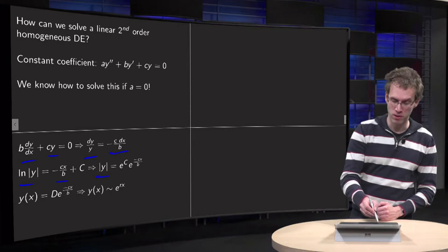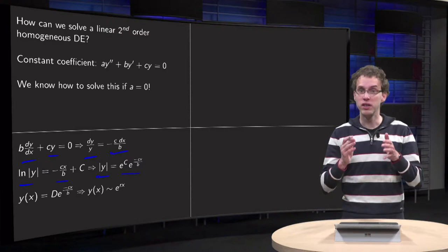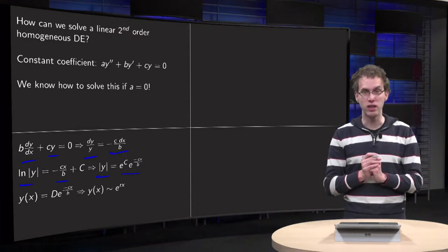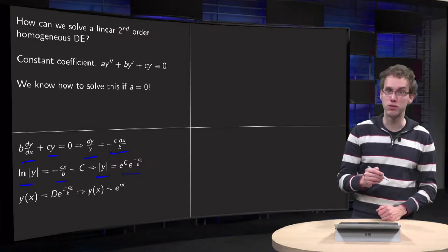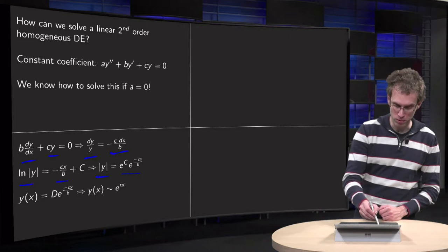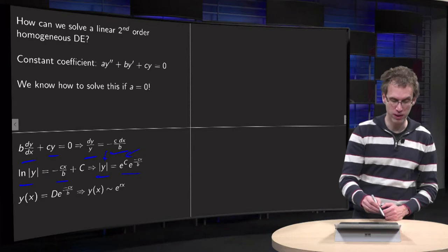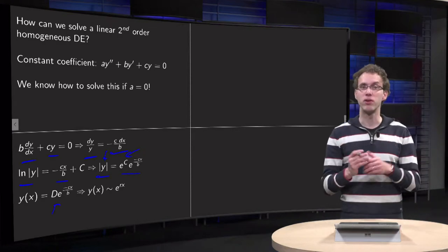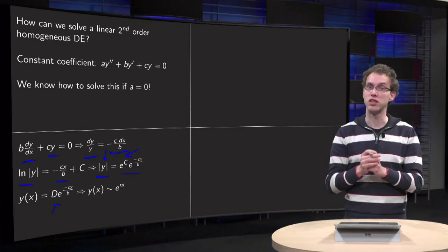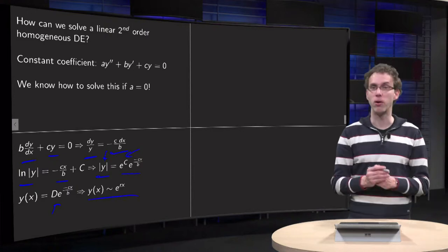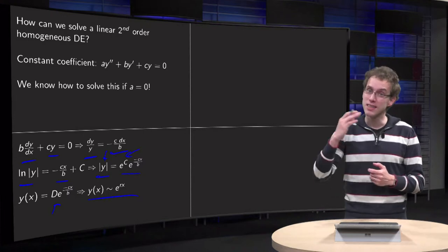Take exponentials on both sides, modulus of y equals e to the power of c times this exponential, and then you can rename e to the power of c equals plus d if y is positive and minus d if y would be negative due to the initial condition. So you put all the constants, e to the power of c and the sign of the modulus of y into one constant d. So there we have here our solution, y equals some constant times exponent minus cx over b. So y is of the form e to the power of rx. And that is the idea which we are going to use in the second order case.